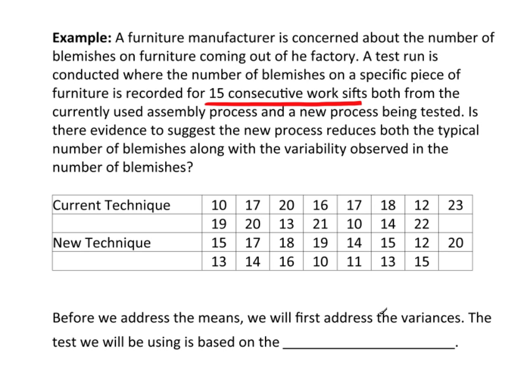Now, is there evidence to suggest that the new process reduces both the typical number of blemishes - the typical number of blemishes, that's referring to either the mean or the median, we have to figure out which is most appropriate - along with the variability observed in the number of blemishes. So we're actually looking for two things here. The typical, meaning the mean or the median, and the variability.